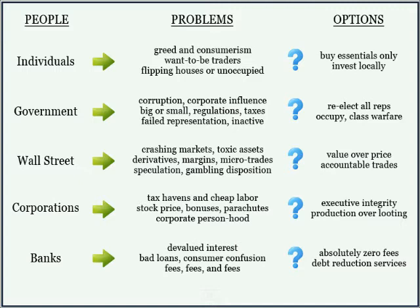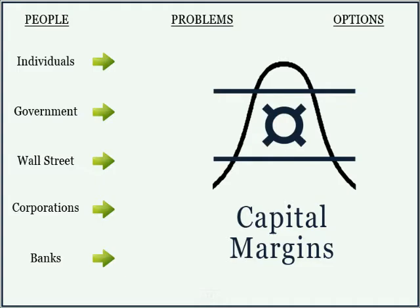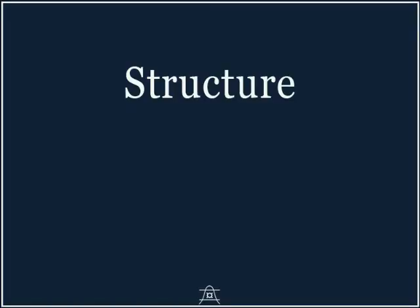I will now present an alternative option called Capital Margins. Capital Margins can correct the economy with a simple bell curve and a few lines. The premise of Capital Margins is to enact upper and lower limits on the distribution of wealth in order to maximize the well-being of the people.